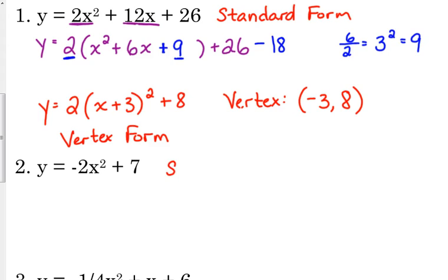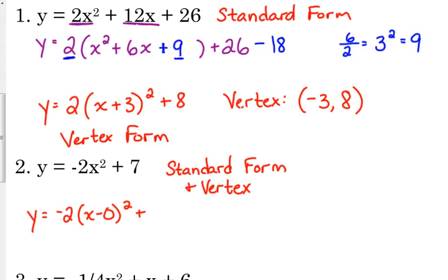So technically this is in standard form and it's technically in vertex form as well because we don't have anything to complete the square with. So if you really wanted to, you could write it like this. You could write it as x - 0 squared, but subtracting 0 doesn't change anything.